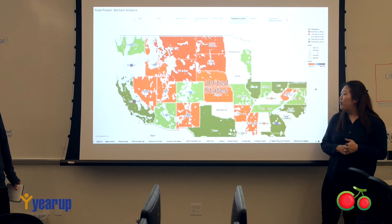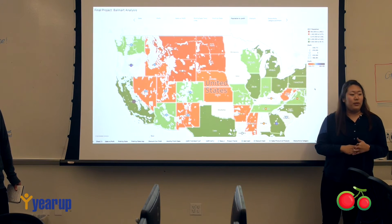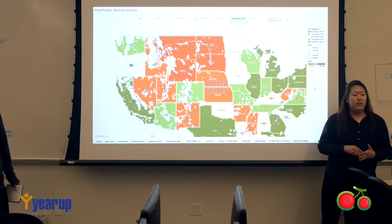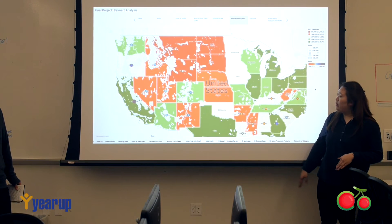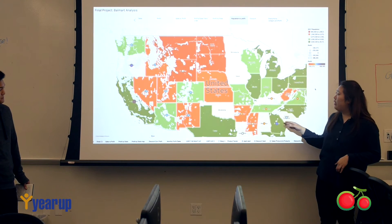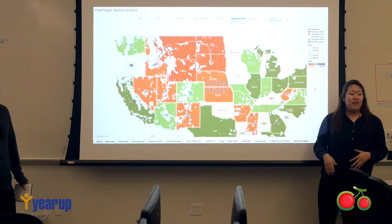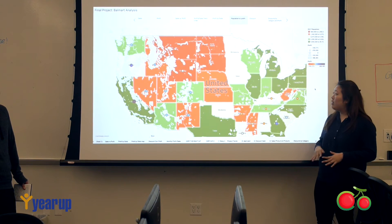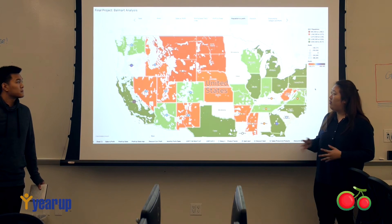We wanted to figure out what could be a factor, so we layered the map with population to see if there was a correlation between how many people live in an area and how much profit that area makes. What we found was that California and more heavily populated places tended to have better profit, while places with a lesser population did not have as strong a profit.